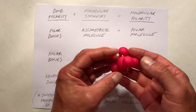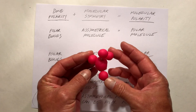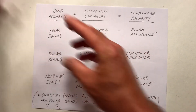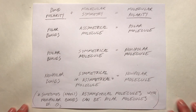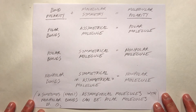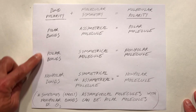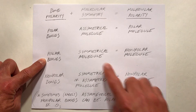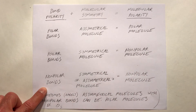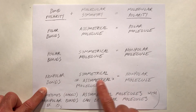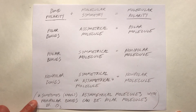The third symmetrical shape we considered was the tetrahedral shape. So if we have polar bonds and symmetrical molecules, we get a non-polar molecule. And if we have non-polar bonds, no matter what the symmetry is, we typically get a non-polar molecule.